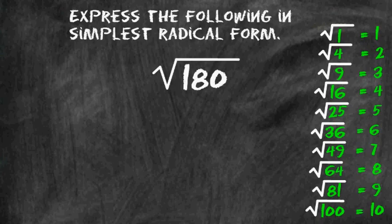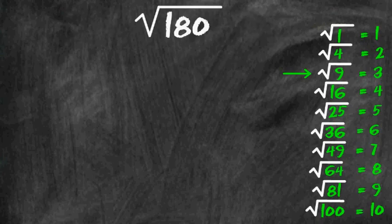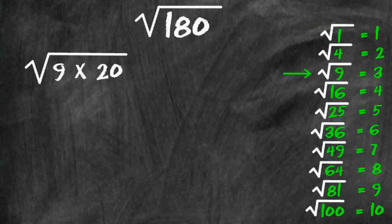Let's try another example. Once again, we are going to start by breaking 180 down into two factors, but remember, we must make sure that one of the factors is a perfect square. 9 times 20 are two factors that will produce 180, and 9 is a factor that is a perfect square.